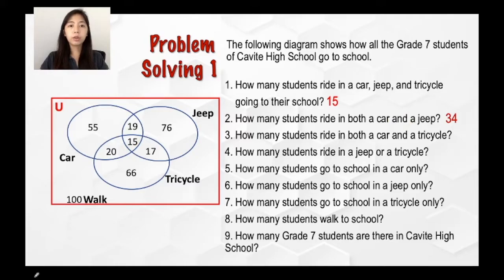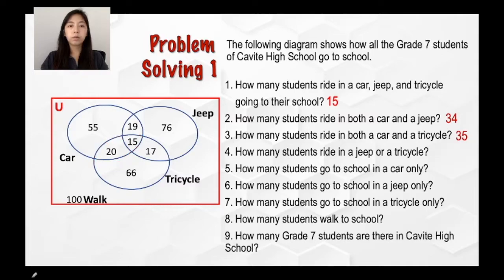For the third question, how many students ride in both a car and a tricycle? This time, you're going to look at the intersection of car and tricycle, which is located here. So when we add the two numbers, there are 35 students who ride in both a car and a tricycle.